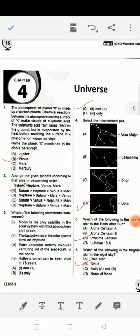Welcome students of Class 8 to the IGKO session workbook Olympiad. Let us start with Chapter 4: Universe. The universe is a very vast thing. You have studied in science there are nine planets, the solar system, along with the galaxy, so many stars, and a lot of things.